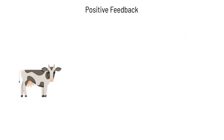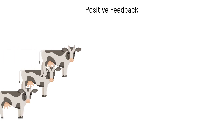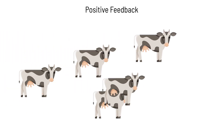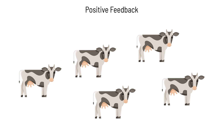An example of positive feedback would be a stampede. One cow running can cause more cows to run. The stimulus of one cow running results in the response of many cows running. The stimulus and response are the same, so this is positive feedback.